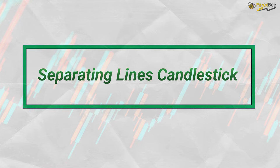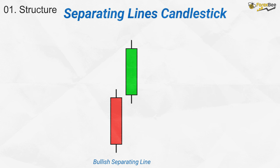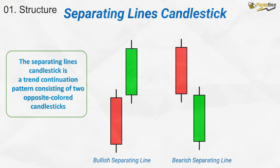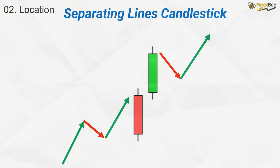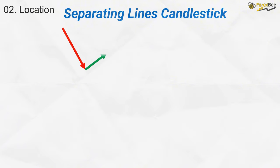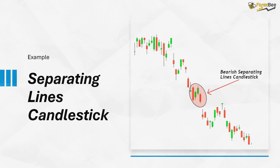Next, let's discuss the separating lines candlestick pattern. It has two types: bullish separating lines and bearish separating lines. In a bullish separating line, a bearish candle first appears indicating selling pressure, then a bullish candle opens at the same level as the open of the first bearish candle and closes higher, signaling a strong recovery by buyers. In a bearish separating line, a strong bullish candle first appears, then a bearish candle opens at the same level as the open of the first bullish candle and closes lower, indicating selling pressure. The bullish separating line forms during an ongoing bullish trend after a brief pullback, while the bearish separating lines pattern forms during a bearish trend. In the example, we can see a bearish separating lines pattern forming during a downtrend, and the trend continues to move bearishly after its formation.